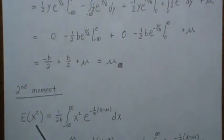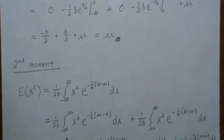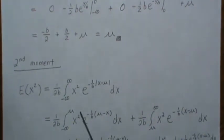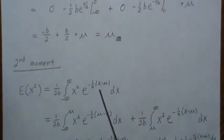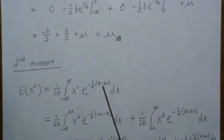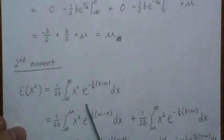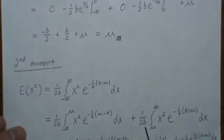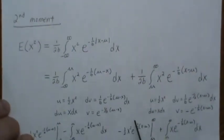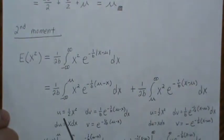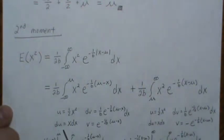To calculate the variance, it's easier to calculate the second moment first: that means integrating x squared times its density over all possible values. We split at mu, which is the point where the absolute value expression changes sign. This time, rather than substituting, we leave it as is — showing you don't have to use that approach. We then do integration by parts: u equals one half x squared, du equals x dx, and dv is the exponential piece.